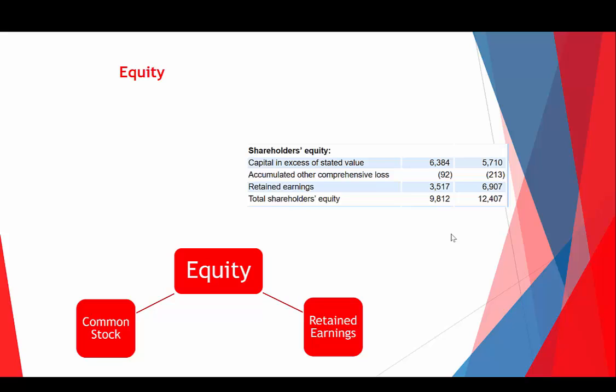Let's move on to equity. Technically, equity is a stockholder's claim to the assets after all liabilities have been satisfied. A simpler way to think about it: assets is everything a company has that will help them make money; liabilities is everything they owe other people. If you take what they have and subtract what they owe, whatever's left is equity — and that goes to the shareholders, who are at the end of that line.